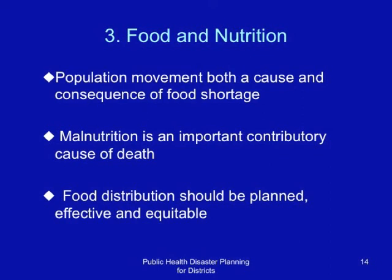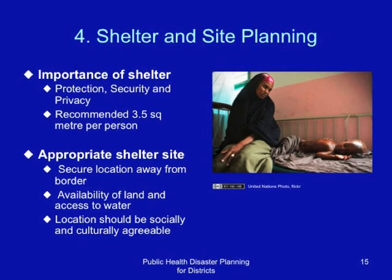Shelter and site planning is an important aspect of complex emergencies, especially where large numbers of people are displaced. Shelter is important for protection, security, and privacy. It is recommended that each person has 3.5 square meters of available space. Appropriate shelter sites should be selected — in a secure location away from the border, with availability of land and access to water, and the location should be socially and culturally agreeable to the affected persons.